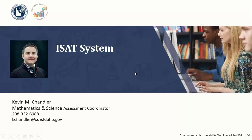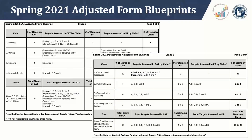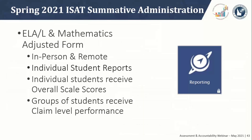Just a reminder: the ELA and math ISATs are required in grades three through eight and ten. The in-person and remote administration testing windows both close on Friday, May 28th. Additionally, the ELA and math summatives will be the adjusted forms. These adjusted forms will be administered in all grades and to all students testing either in-person or remotely. For more details on these adjusted forms, see the blueprints on the ISAT portal. Let's go over the student performance data that will be available from the completion of these adjusted forms.